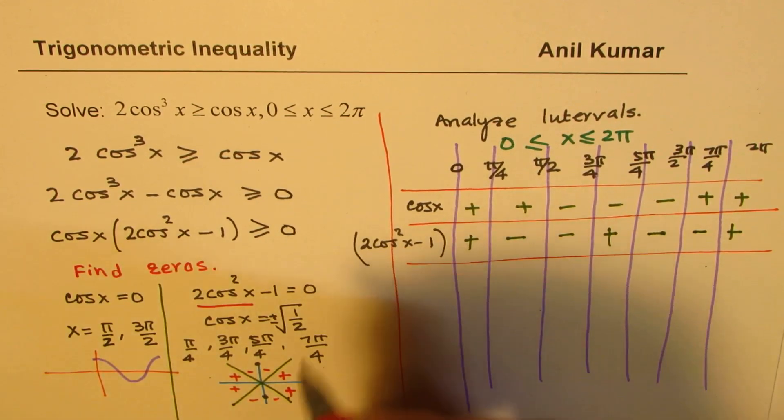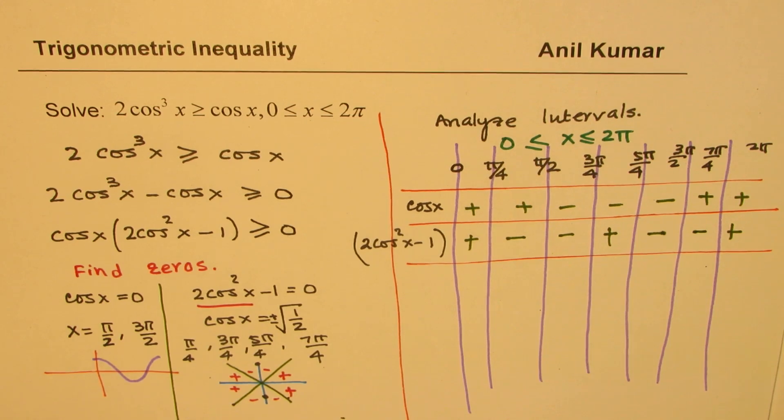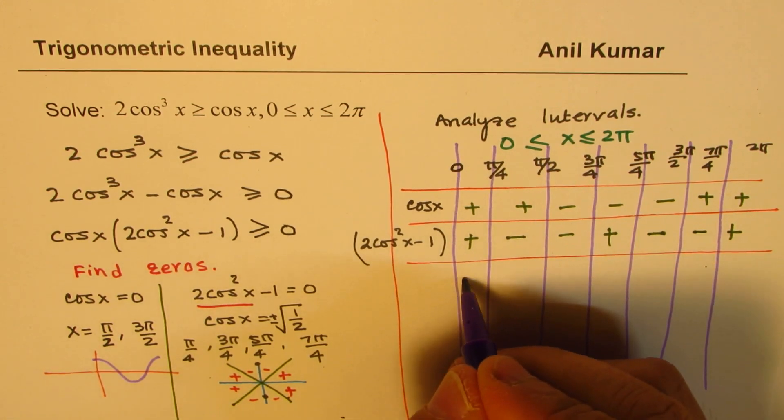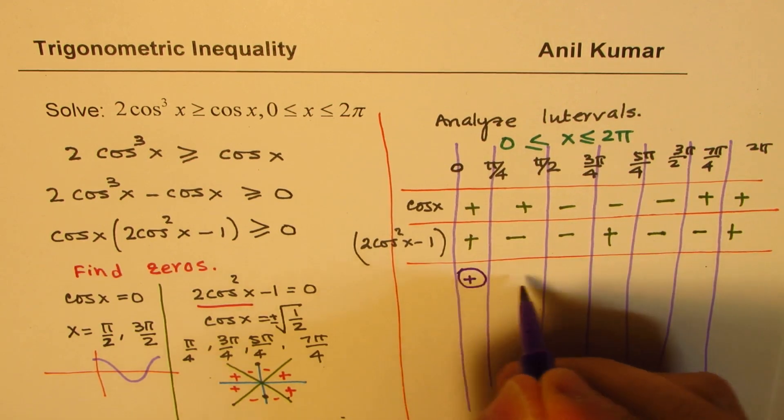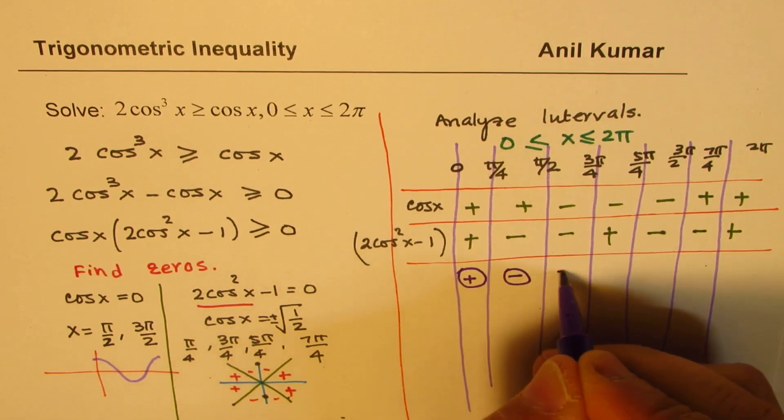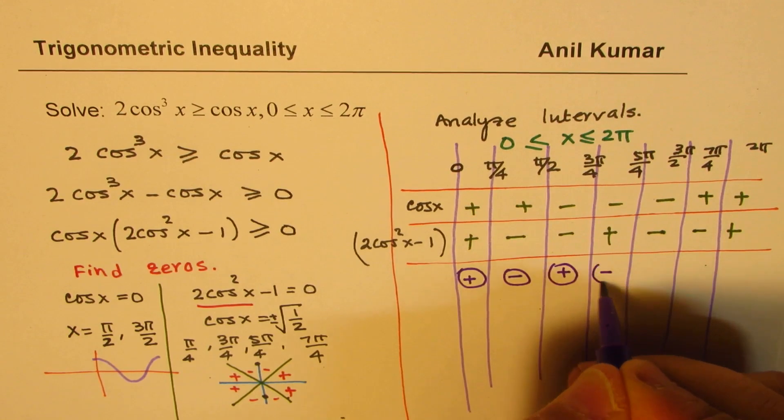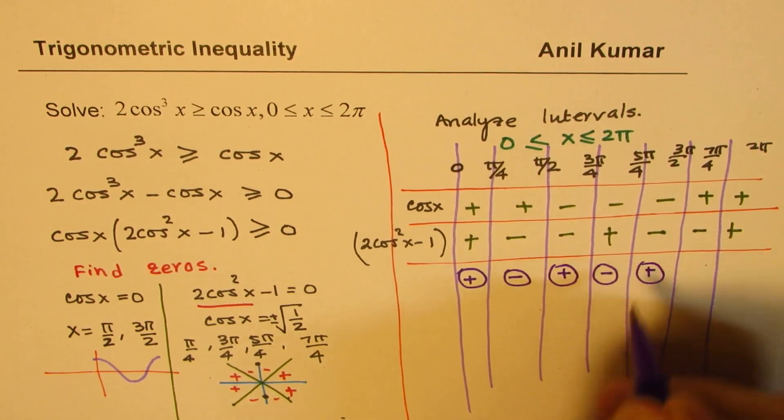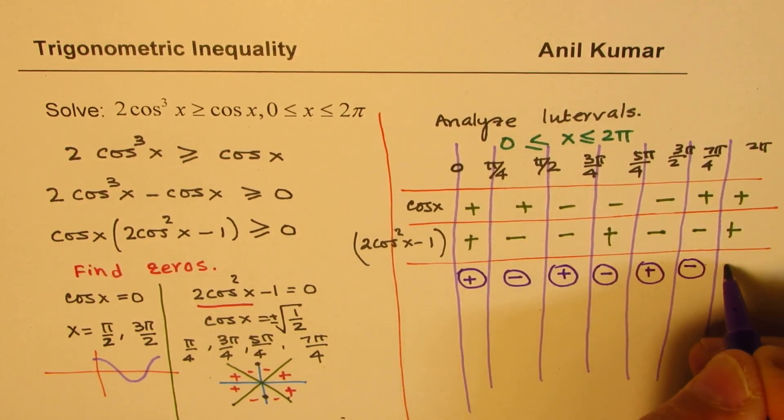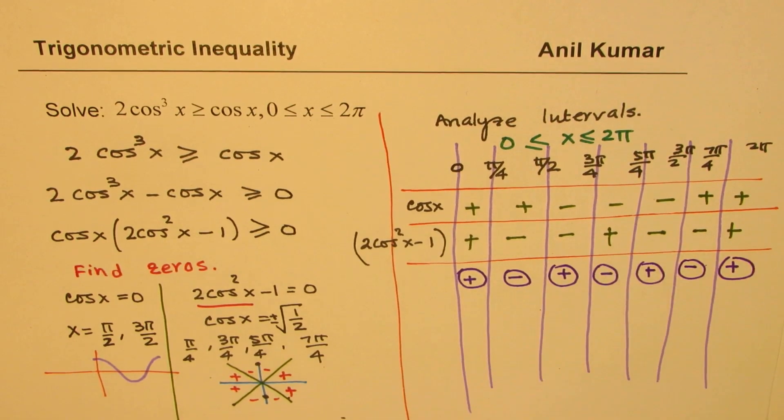We are interested in positive. So when you multiply 2 of the same sign, you get positive. So this is positive, this is negative, this is positive, this is negative, this is positive, this is negative, and this is positive. So our solution includes all the intervals when it is positive.